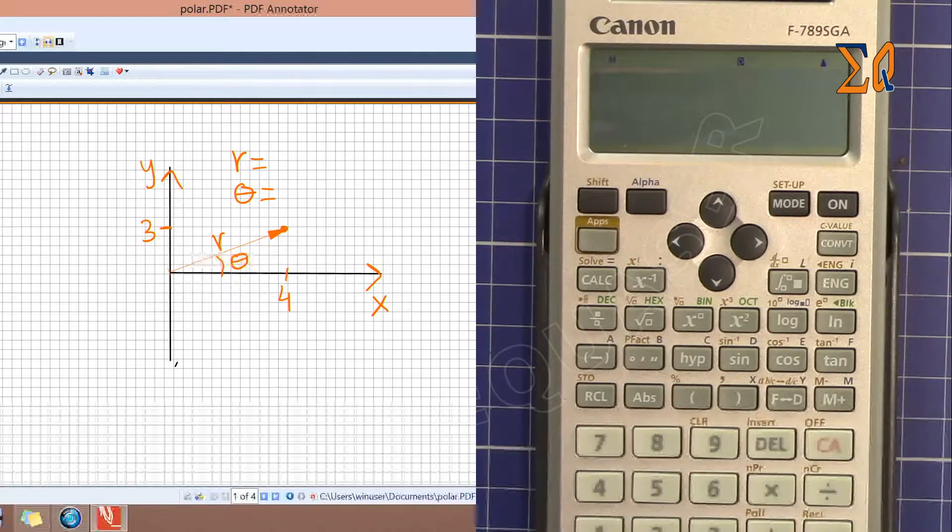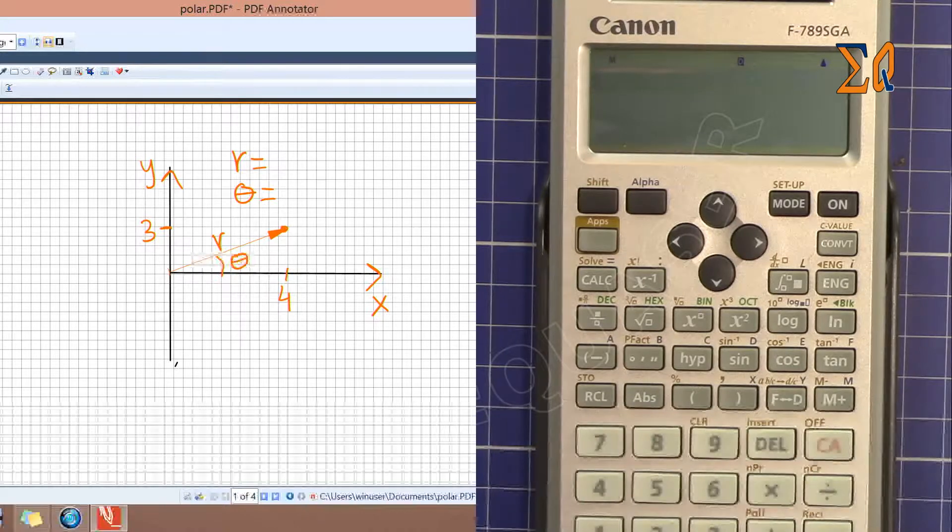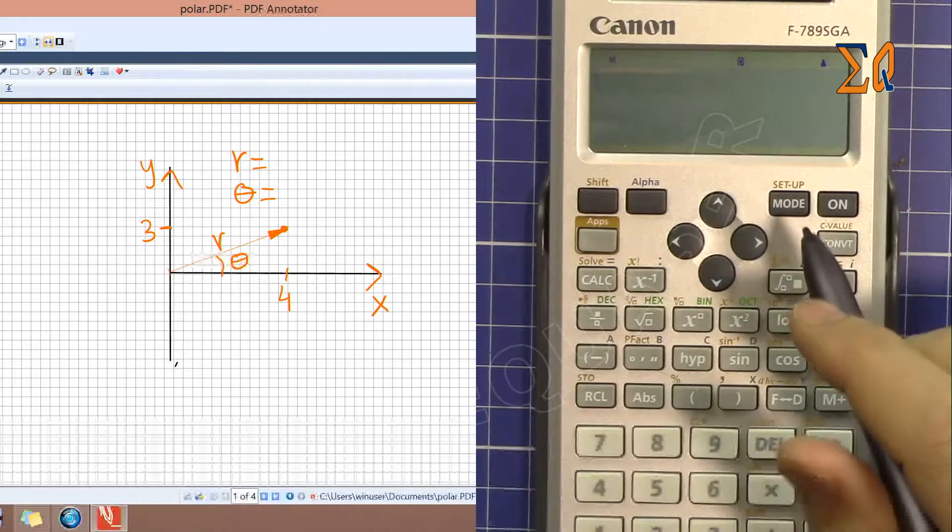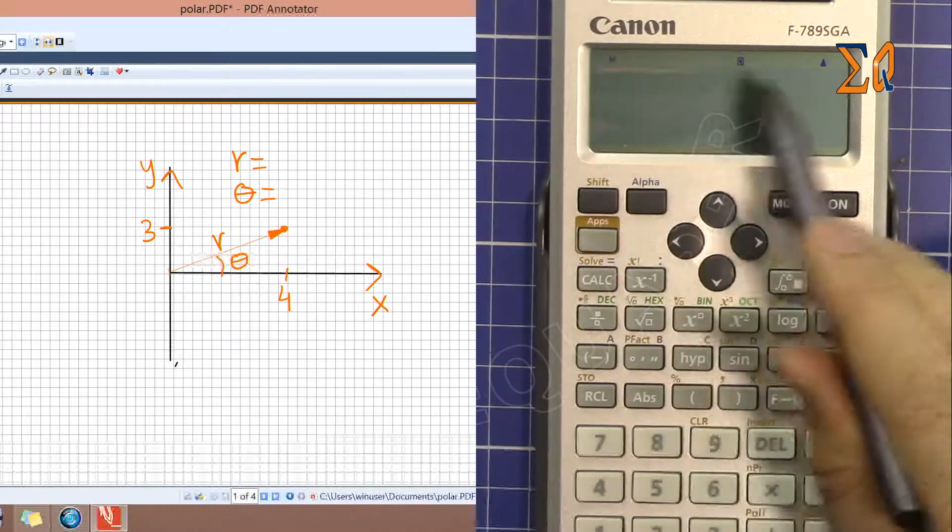Hi welcome to Equasor. In this video I am going to show you how you can convert polar to rectangular or rectangle to polar using the Canon F789SGA calculator.